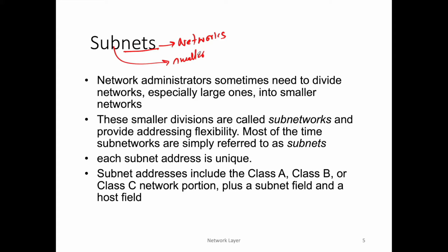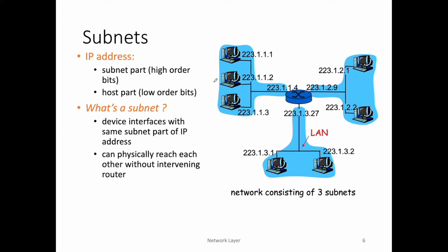In subnets, the subnet part is basically the higher-order bits, and all the machines in a subnet share the same value of those higher-order bits. For example, certain bits represent the subnet part and the remaining bits represent the host portion.